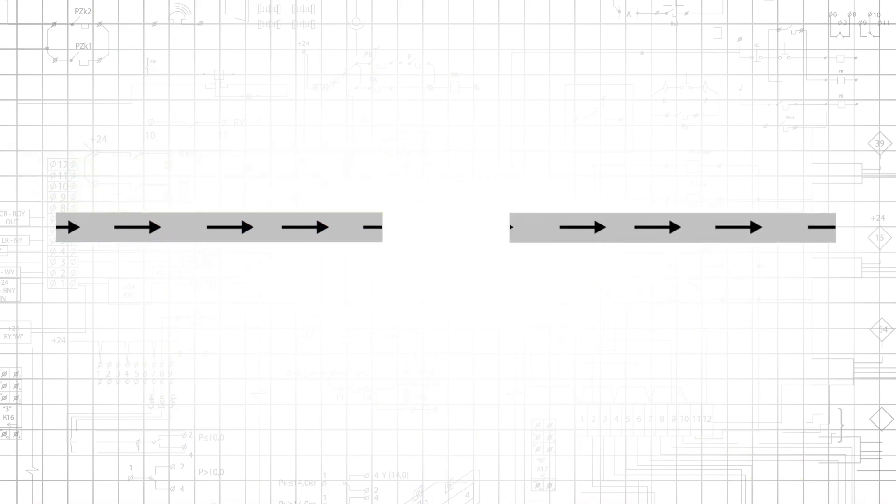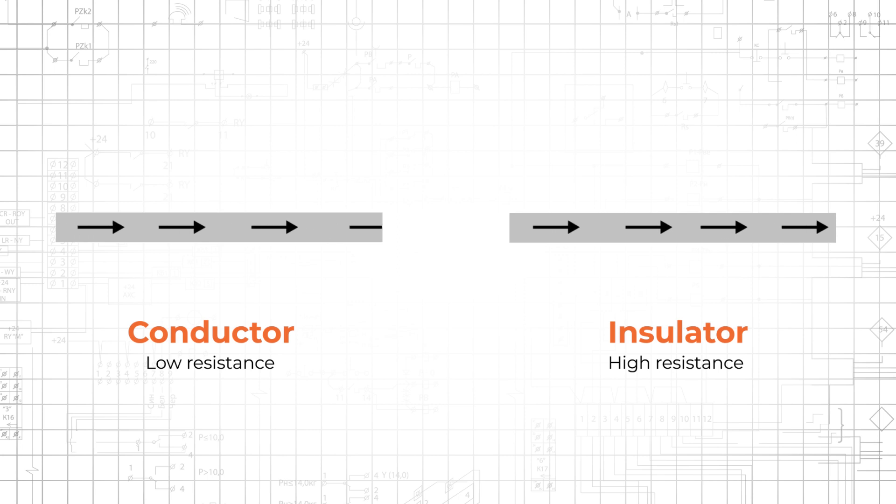All materials except superconductors present some amount of resistance. The terms conductor and insulator do not identify materials that have respectively zero resistance and infinite resistance. Rather, they are convenient ways of referring to materials that exhibit very low resistance and very high resistance.